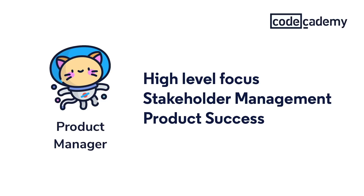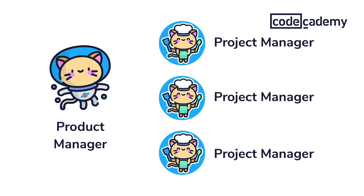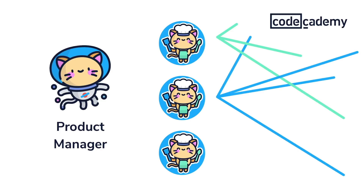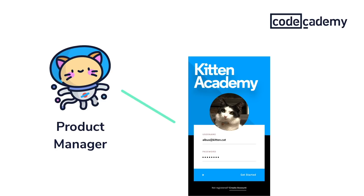Depending on how complex a product is, product managers will need to break up the construction, maintenance, and oversight to their subordinates, usually project managers. But a product manager can't be everywhere all the time, so they're counting on project managers to facilitate a number of things that need to happen for a ship to both stay afloat and complete the voyage. For our Kitten Academy project, a product manager is in charge of overseeing the build-out of the video conferencing feature. To do that, they delegate to project managers to break up the build-out into steps designers and developers can focus on.